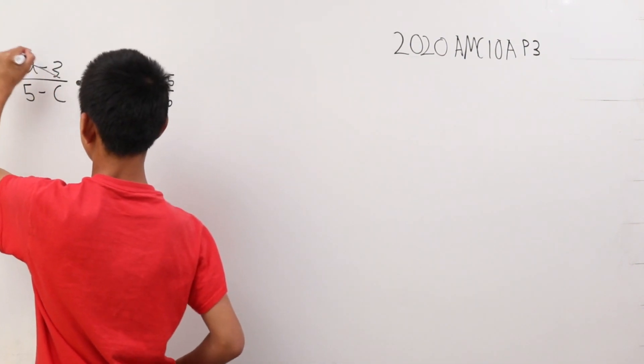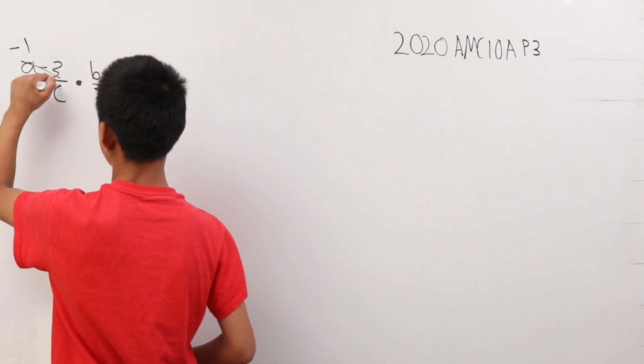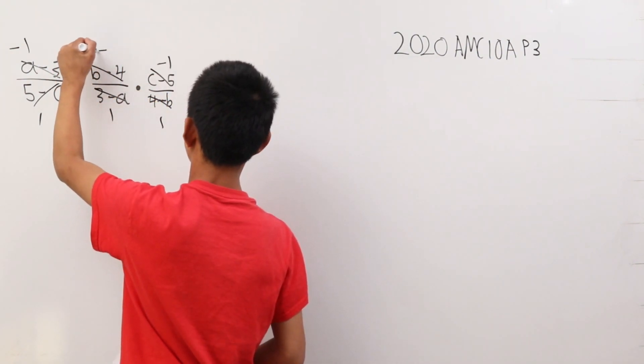This becomes a 1, this becomes negative 1, since the negative is in front of it. So we can do the same things here. This is 1, this is negative 1, 1, and negative 1.